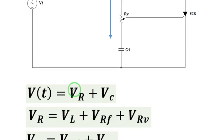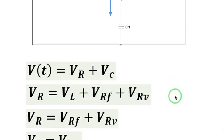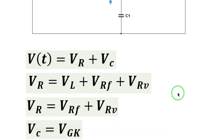V sum R is the voltages of the resistors and V sum C is the voltage across the capacitor. V sum R is the sum of the voltages of the resistances. But since VL is very small, we can neglect that one such that V sum R equals the sum of the voltages of the fixed resistance and the variable resistance.